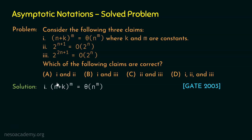Claim 1 states that (n + k)^m is Θ(n^m). The theta notation tells us the two functions are asymptotically equal, meaning (n + k)^m is asymptotically equal to n^m. We can rewrite (n + k)^m as n^m + k^m. Here, k^m is a constant function because k and m are constants, while n^m is a polynomial function since n represents the input and m is a constant.